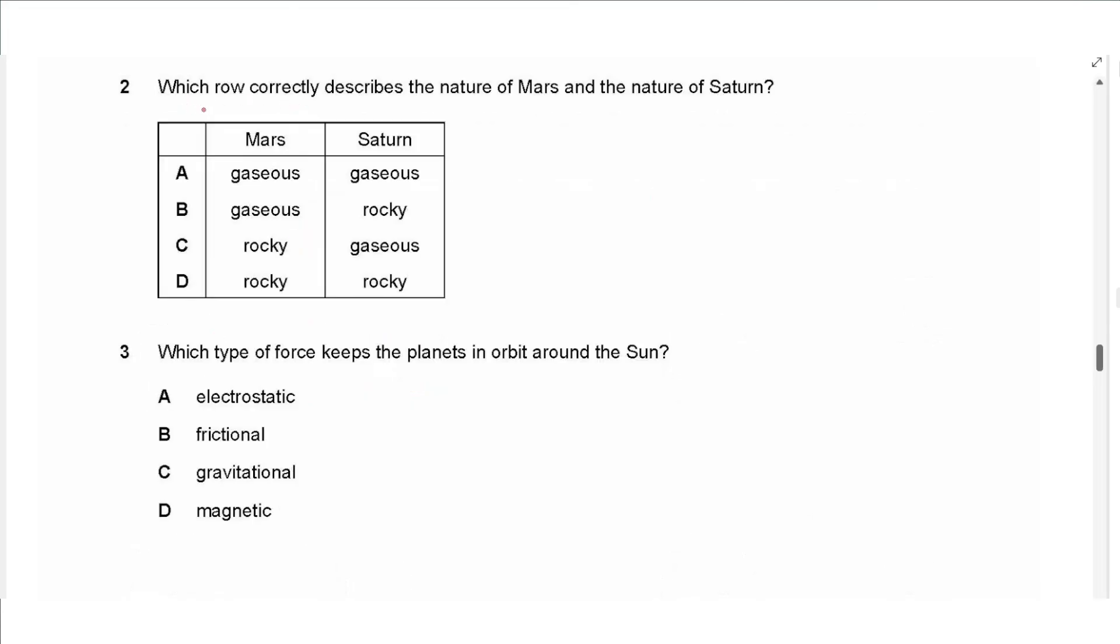The next question says, which row correctly describes the nature of Mars and the nature of Saturn? Mars is from the inner planets, so it's a rocky planet, and Saturn is from the outer planets, which are gas giants, so it's gaseous. The answer is C.